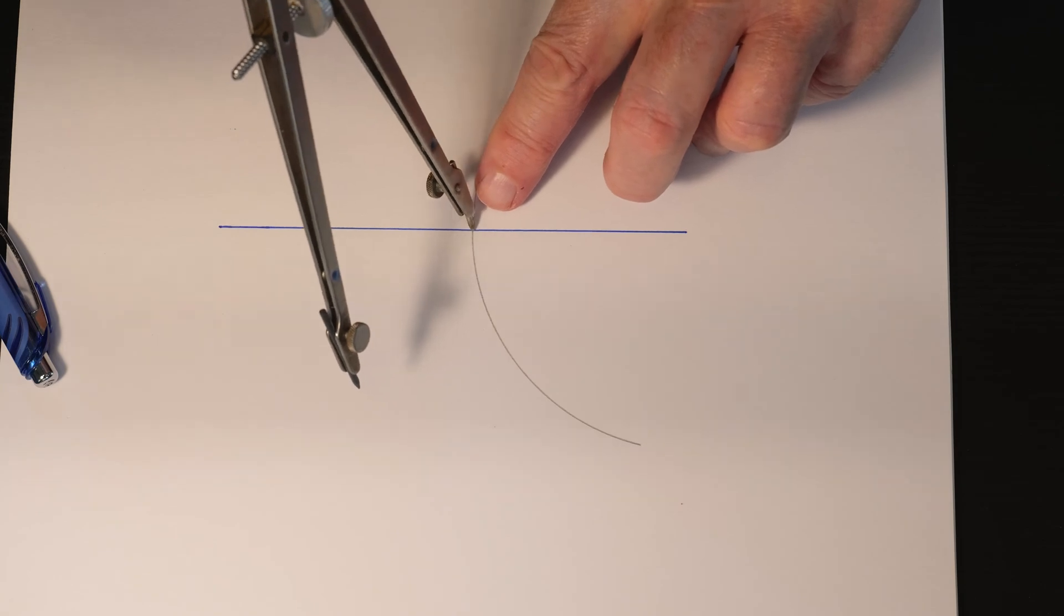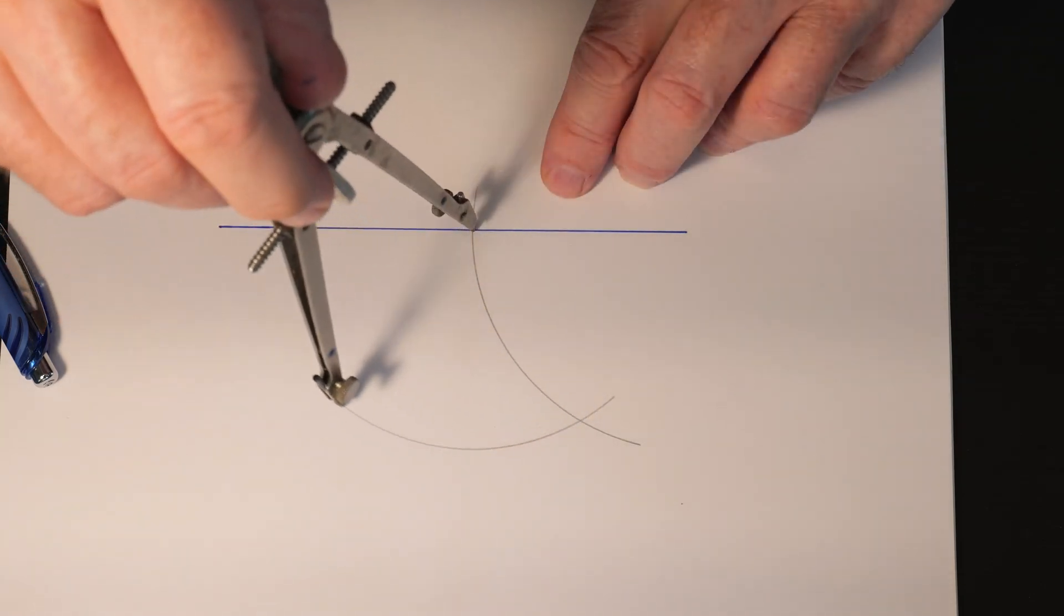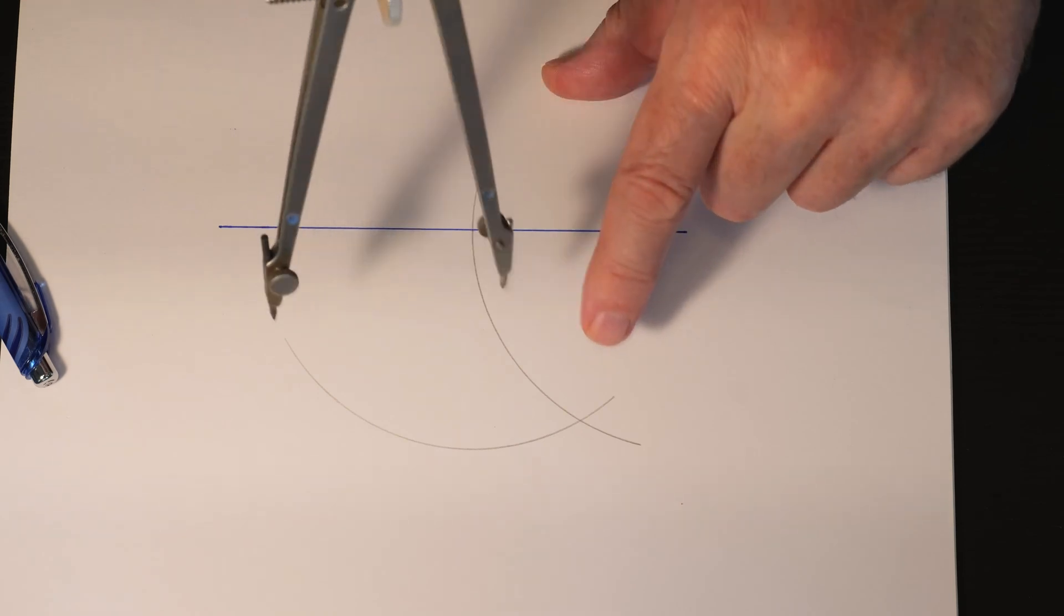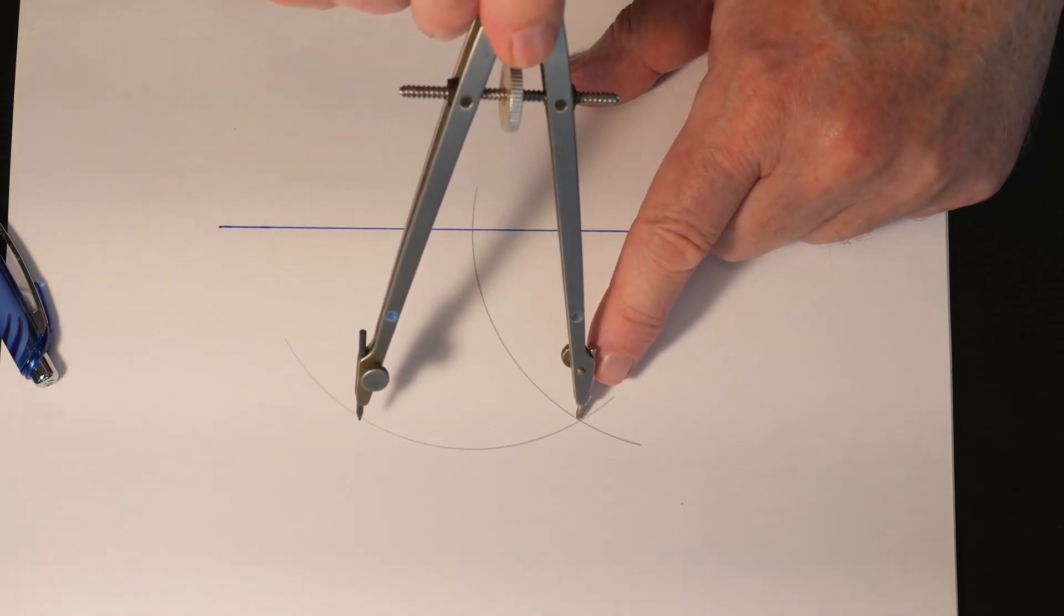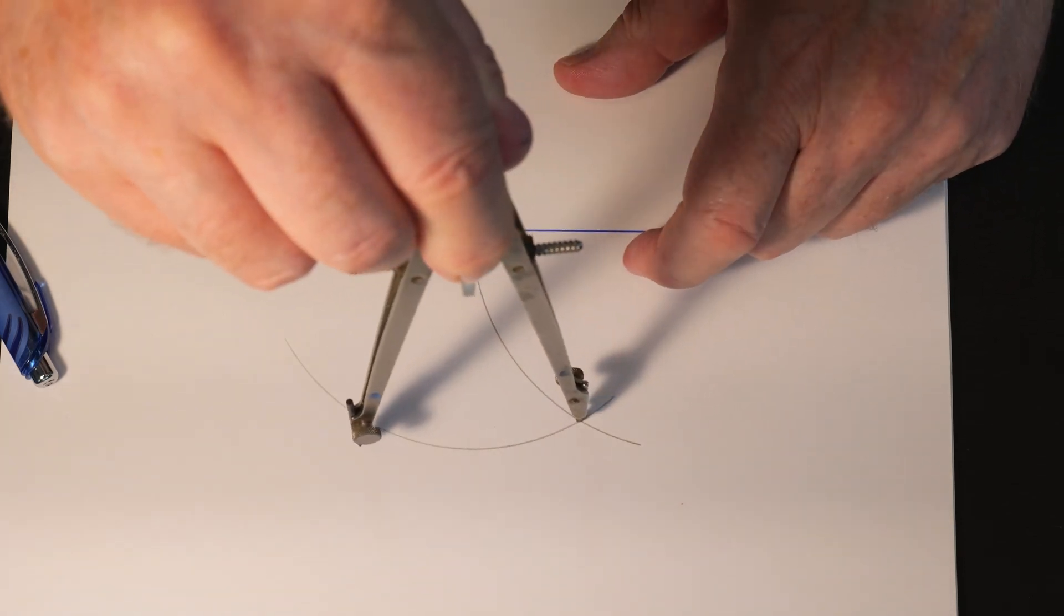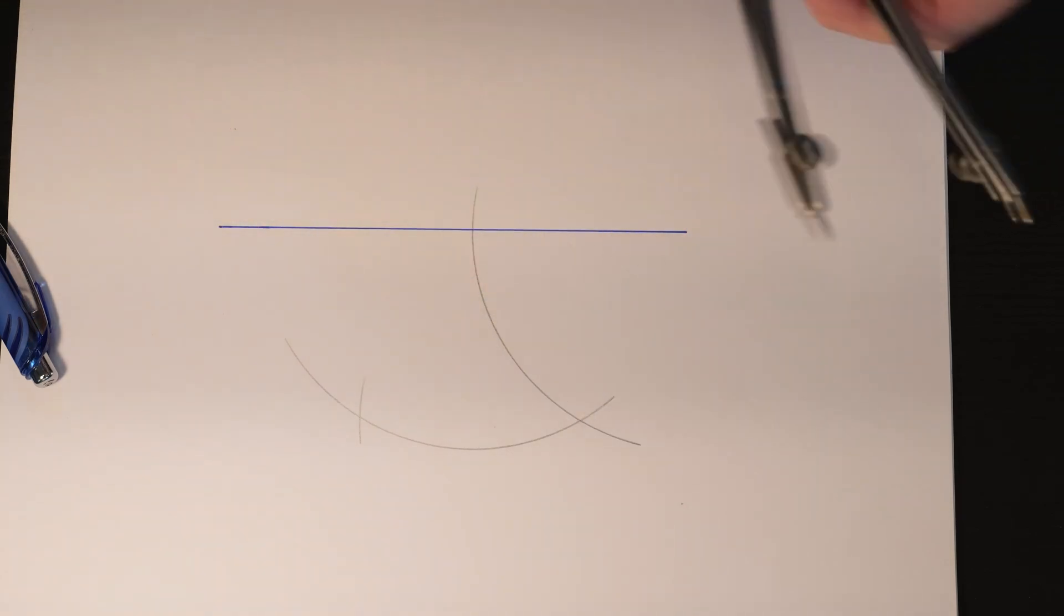Then you're going to put your point on that intersection and draw another arc, and then thirdly, you're going to put the point of this compass where those two arcs intersect and draw a short intersecting arc there.